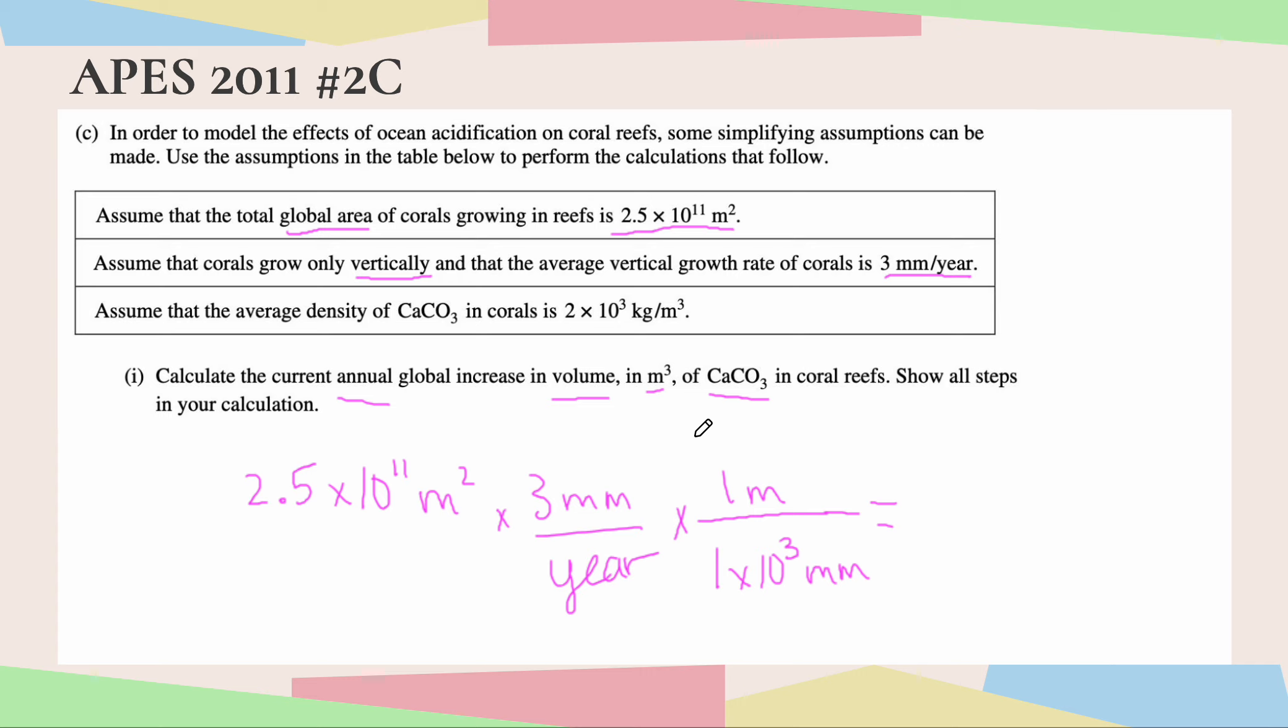There are 1 times 10 to the 3rd millimeters in 1 meter, and that's just using simple metric conversions. Now from here, I'm going to go ahead and cancel out my units. And look, now my units work, which is basically confirming that my setup is correct, because now I have meters squared times meters, which is meters cubed. I basically have per year, which is kind of optional, but I'm going to go ahead and leave it there.